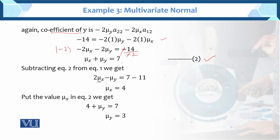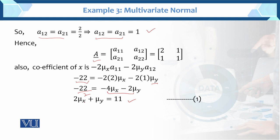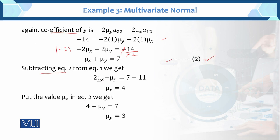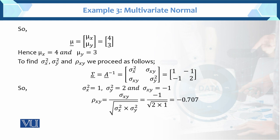Subtracting equation 2 from equation 1, we solve them simultaneously to determine the values. After solving, we get mu_x equal to 4. Substituting the value of mu_x into equation 2, we find mu_y equal to 3. So mu_x = 4 and mu_y = 3.